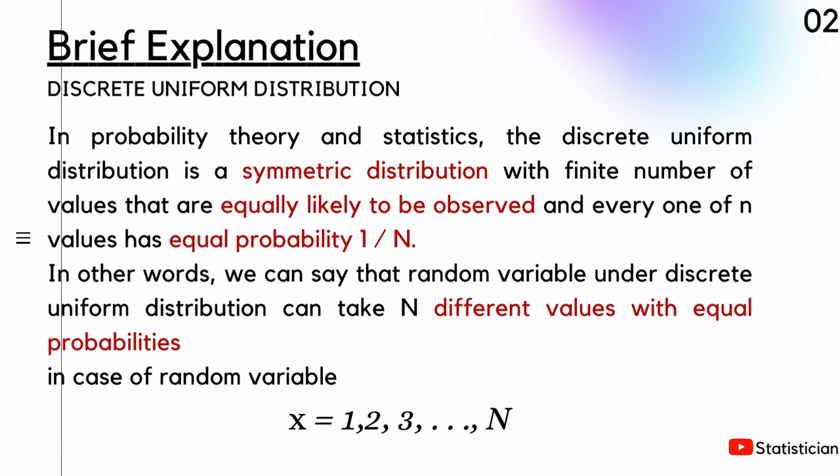So the random variable takes values 1, 2, 3, and so on up to capital N under Discrete Uniform Distribution. There are two types of random variables.